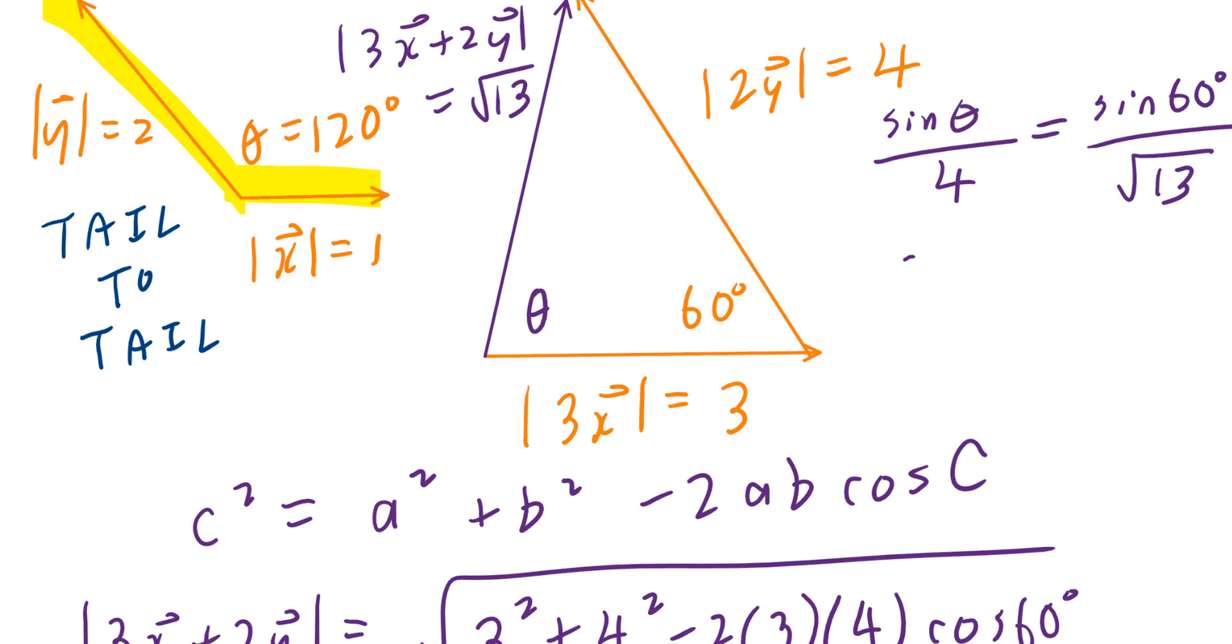So now, to find angle theta, first, the opposite of dividing by 4 is to multiply by 4. And in one step, here's what happens, right? You take your calculator, you press 4 times sine of 60, divide that by the square root of 13. Take the inverse sine of that, and if you round your final answer to the nearest degree, we're looking at approximately 74 degrees.